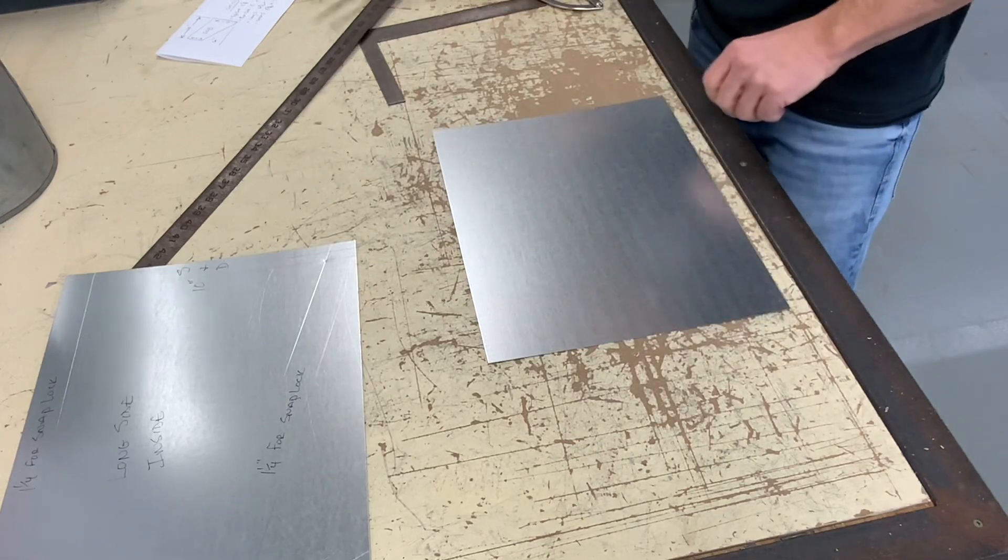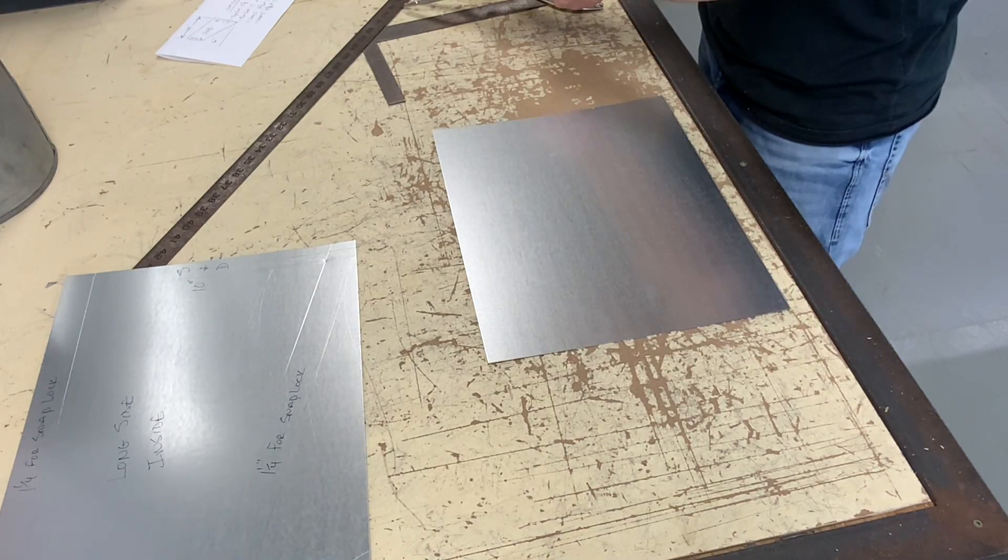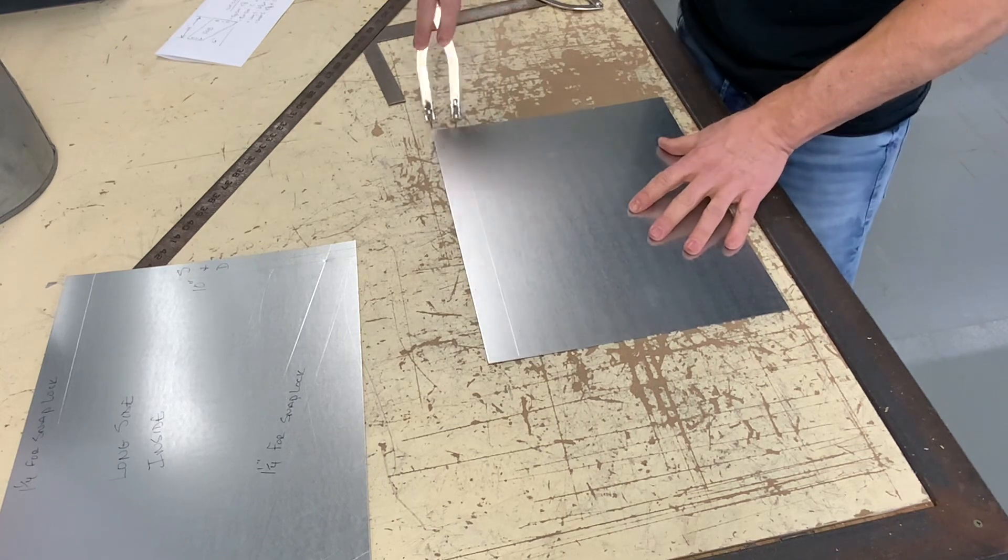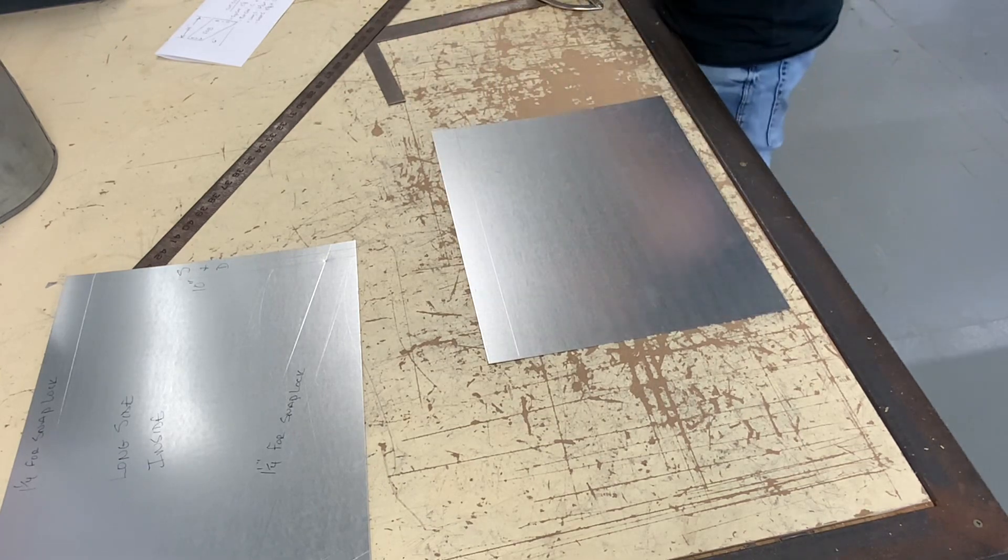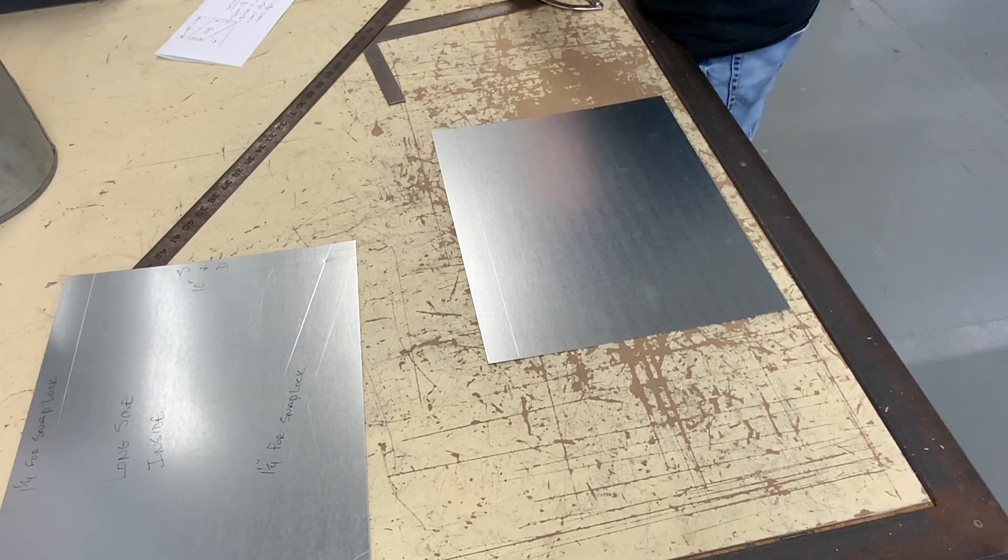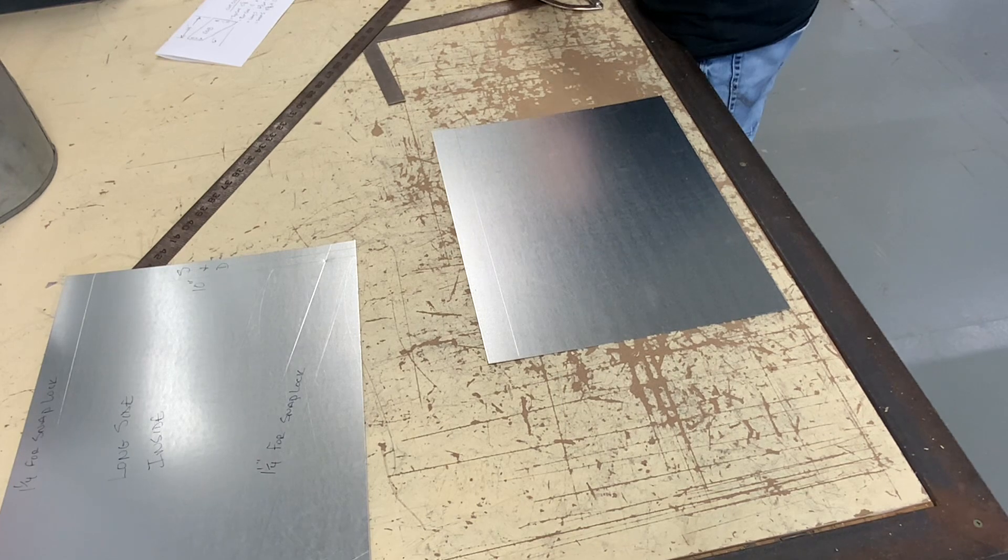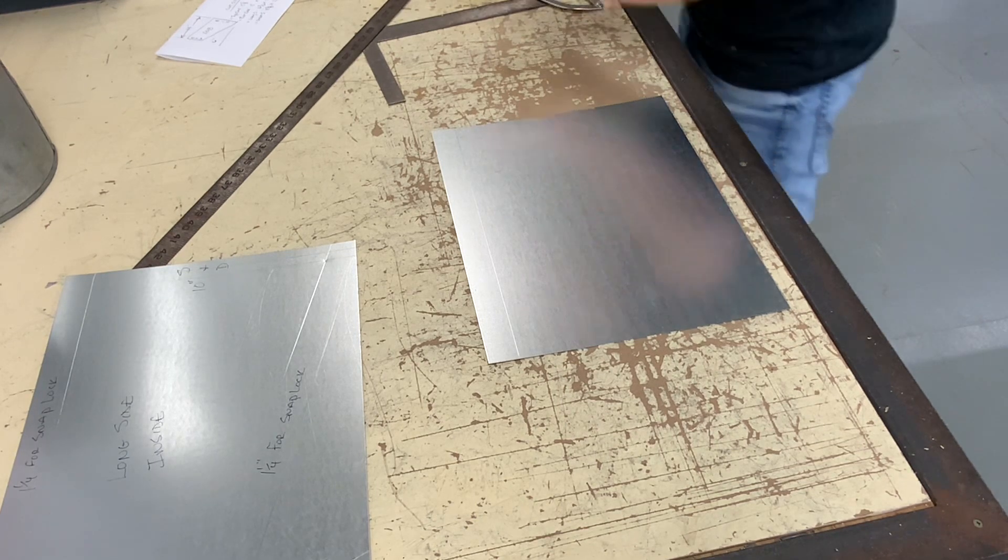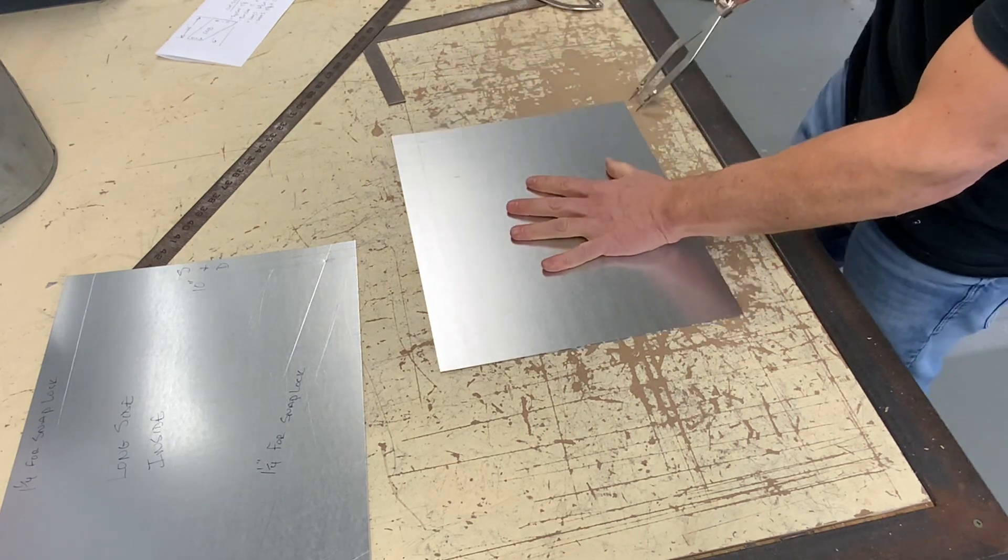Now that we've finished laying out the long side, I'm going to go ahead and do the short side. The short side is identical to the long side. The short side simply measures a bit less.